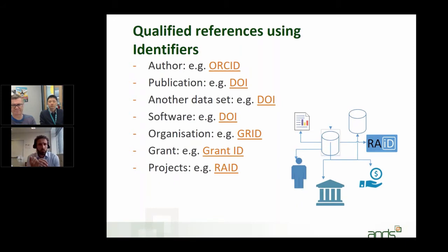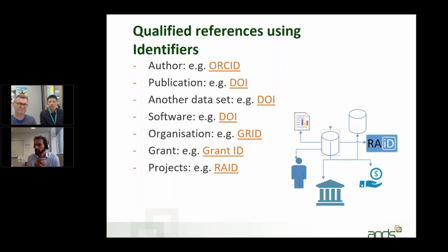Here is a list of possible identifiers — these are just examples, there are more out there. For example, if you're referring to an author, include their ORCID. If you're referring to a publication, use the DOI related to that publication. If you are referring to software, nowadays you can assign a DOI to a software package and then refer to that DOI.